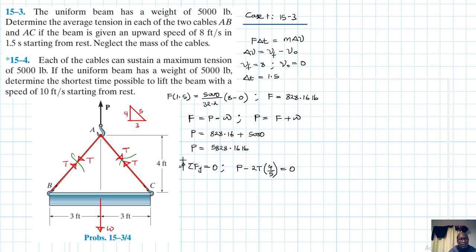Substituting the values: 5,828.16 minus 2T times (4/5) equals 0. Solving for T gives us T equals 3,642.6 pounds. This is the average tension in each cable for Case 1.